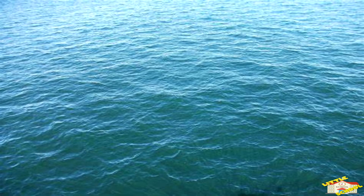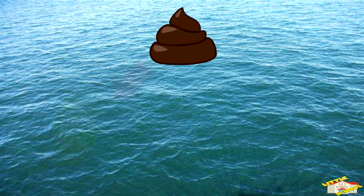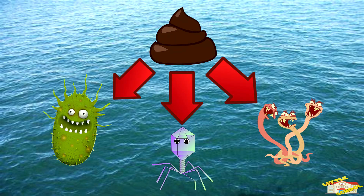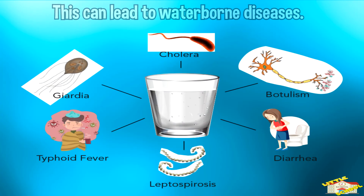Pathogens such as bacteria, viruses, and parasites can enter water sources through human and animal waste. This can lead to waterborne diseases that can be harmful to both aquatic and human life.